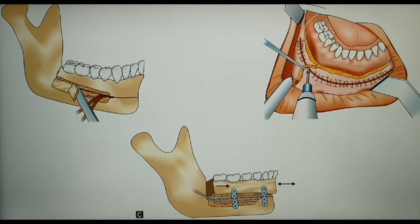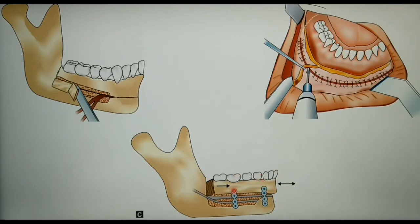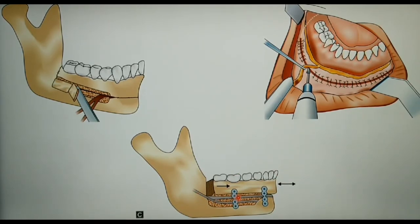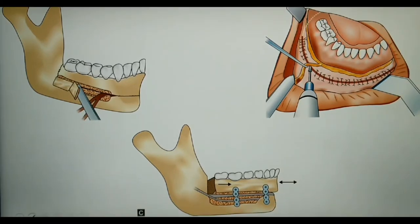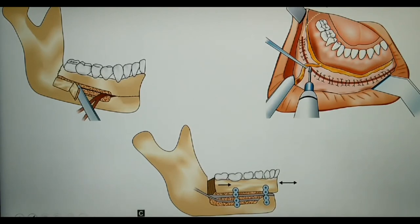Once the osteotomy is completed, the dentoalveolar segment is mobilized and repositioned as required. The neurovascular bundle is also repositioned and secured using pieces of bone. The repositioned dentoalveolar segment is then stabilized and rigid internal fixation is performed.